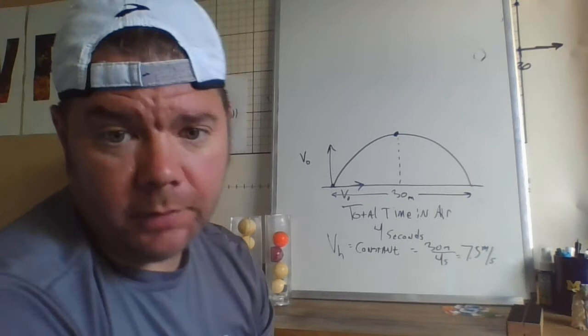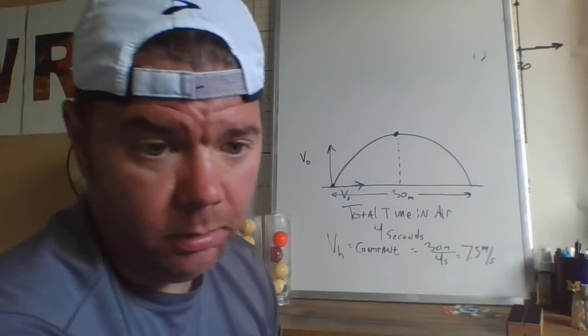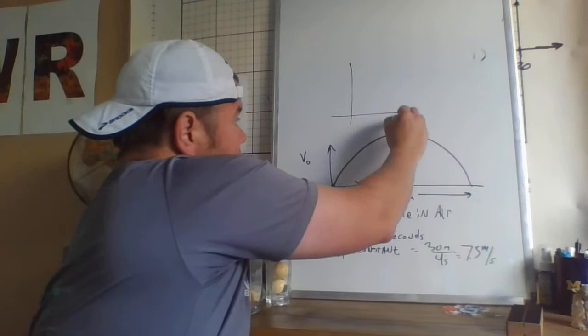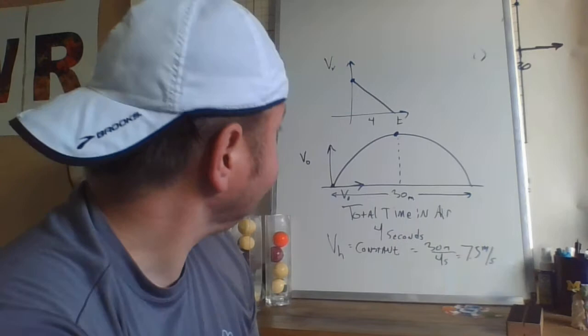Okay, so the horizontal velocity, not too bad. Now the vertical velocity, also not too bad, but we have to remember that that is not constant, so we can't use the same equation here. Remember what we've been using to analyze vertical motion is velocity graphs. So this is the velocity graph.